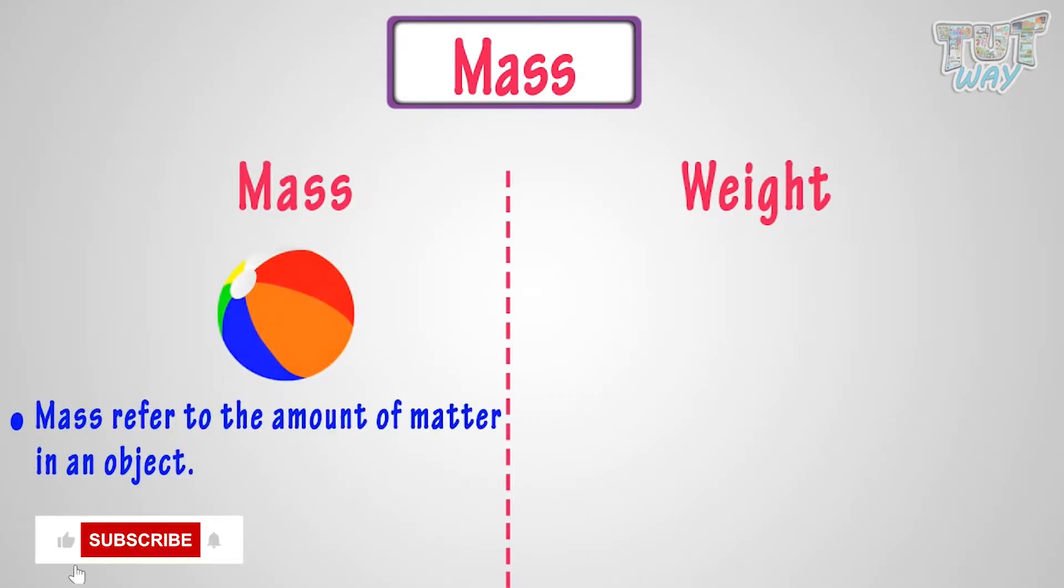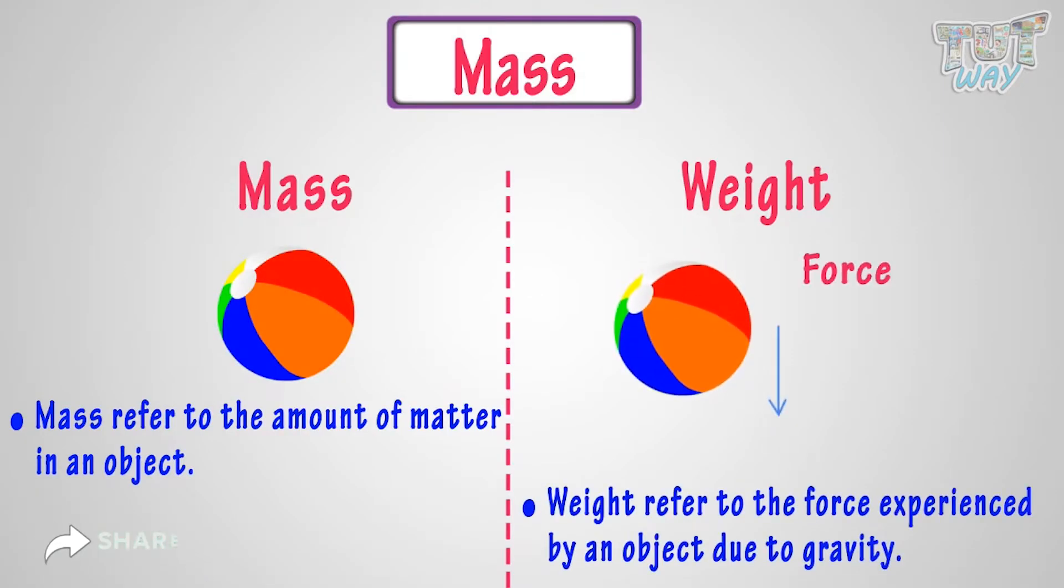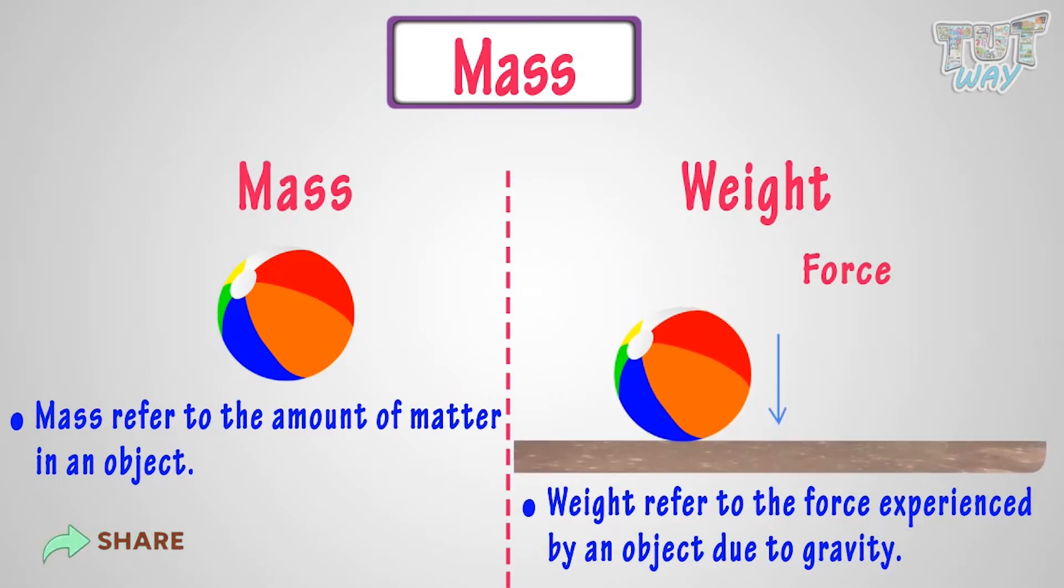Mass refers to the amount of matter in an object, and weight refers to the force experienced by an object due to gravity.